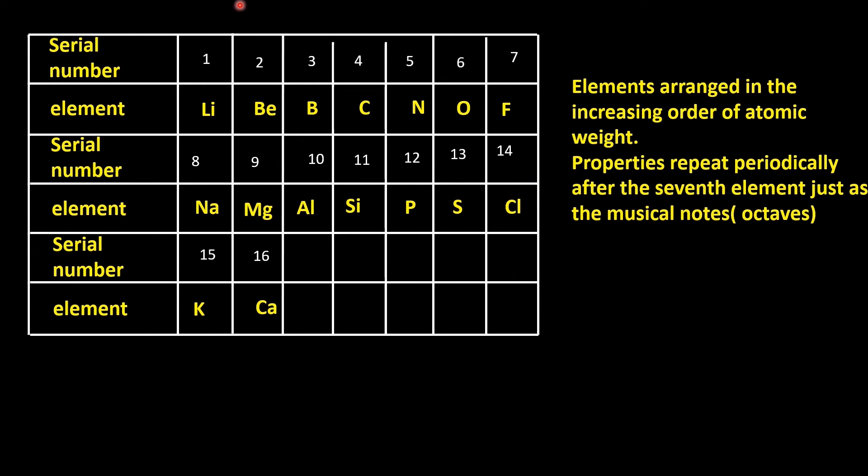Newlands' Law of Octaves, 1865. In 1865, Newlands classified elements on a different basis. He also considered increasing order of atomic weight. His law is called Newlands' Law of Octaves. It states that when elements are arranged in increasing order of atomic weight, properties repeat periodically after the 7th element, just as the musical notes. He used serial numbers from 1 to 7, then arranged the elements in the increasing order of their atomic weights.